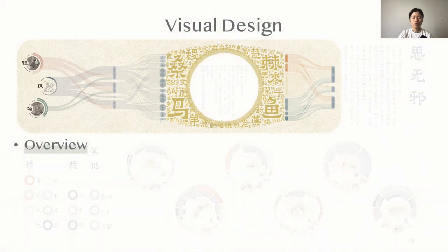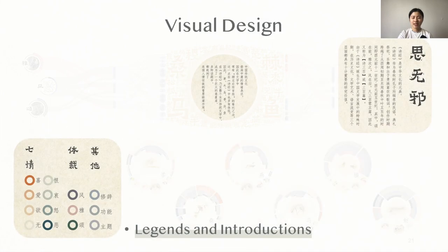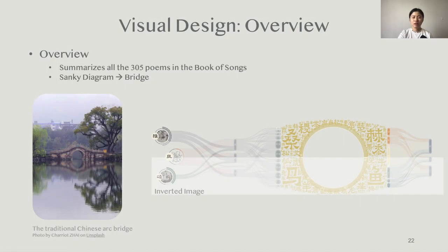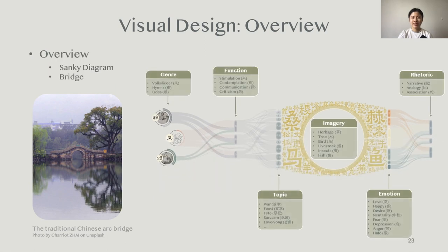The pictorial consists of three parts: a flow overview, six glyphs to summarize the top frequently appeared imaginaries, and a set of legends and introductions. Our overview summarizes all the poems in the Book of Songs. We apply a Sankey diagram formed into the shape of a Chinese arc bridge. From left to right, the node groups represent different dimensions we summarized.